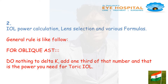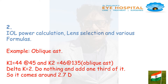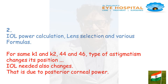For oblique astigmatism, do nothing to delta K — just add one third of that number, and that is the power you need for the toric IOL. Example: K1 is 44 at 45 degrees and K2 is 46 at 135 degrees, delta K is 2. Do nothing and add one third: it comes to approximately 2.75D. For K1 and K2 of 44 and 46, everything is the same but the type of astigmatism changes its position and the IOL power needed also changes — that is due to posterior corneal power.